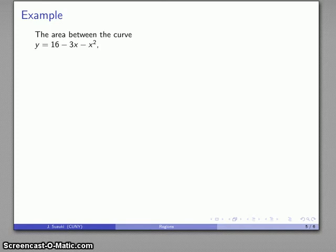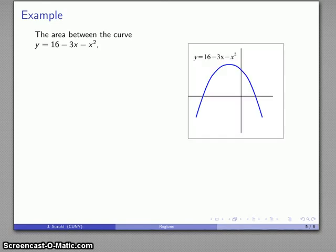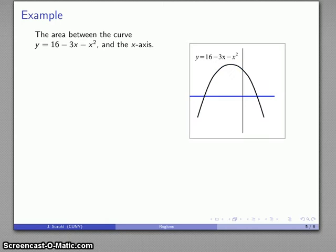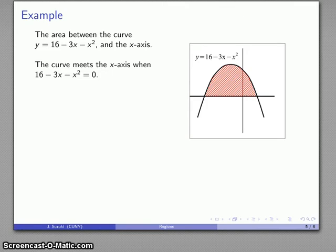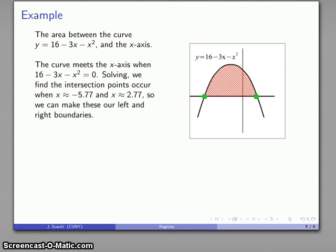I'll have another example. How about the area between the curve y = 16 - 3x - x² and the x-axis? Again, I have a curve, I have the x-axis, and I have a bounded region which is in between the two. As before, it's helpful to find where the right and left boundaries are. Way over on the left I have this point of intersection, way over on the right I have this point of intersection. I can find those two points of intersection, and they occur at approximately x = -5.77 and x = 2.77. So I can make those two our left and right boundaries.